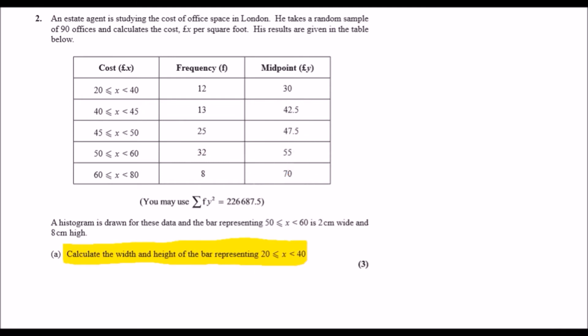Okay guys, welcome to question 2. So what do we have here? A state agent is studying the cost of office space in London. He takes a random sample of 90 offices and calculates the cost, x pound per square foot. His results are given in the table below.